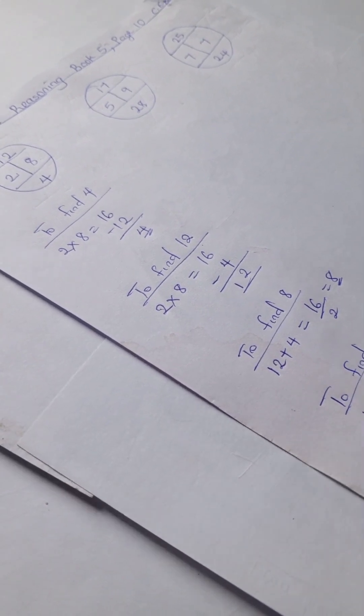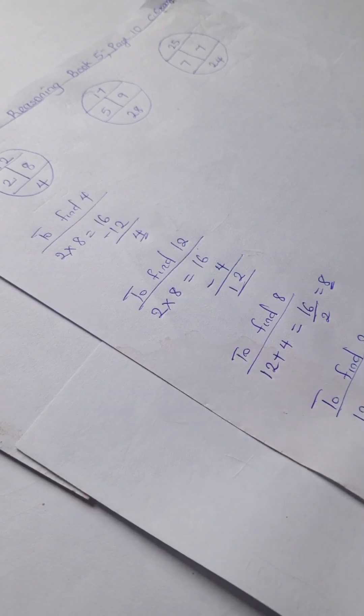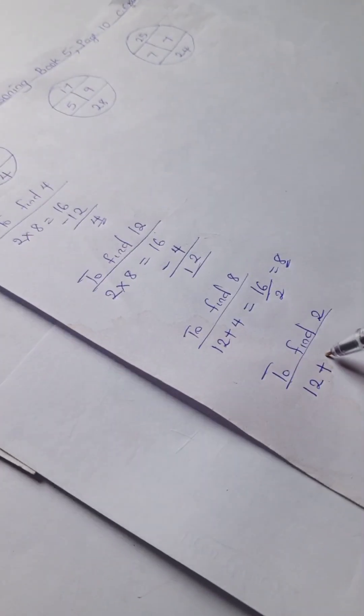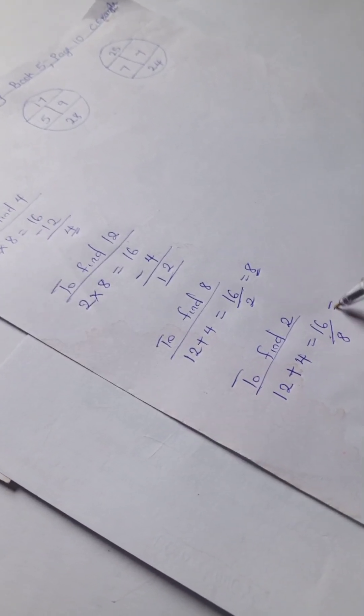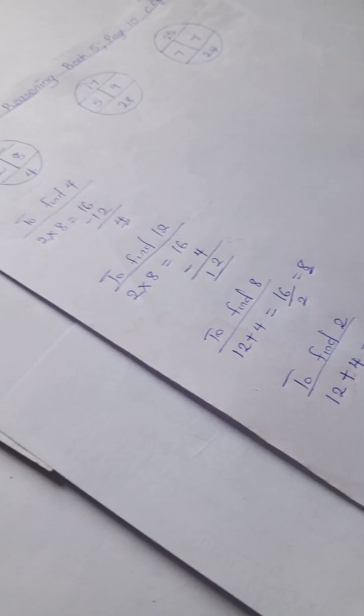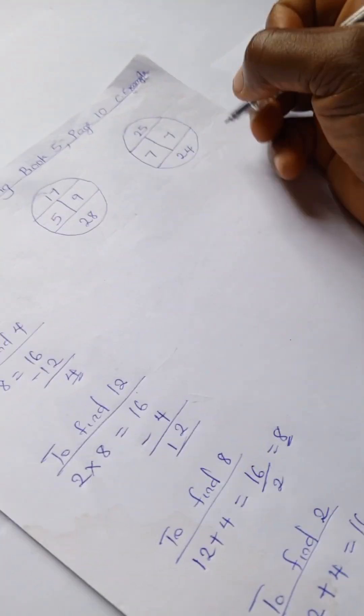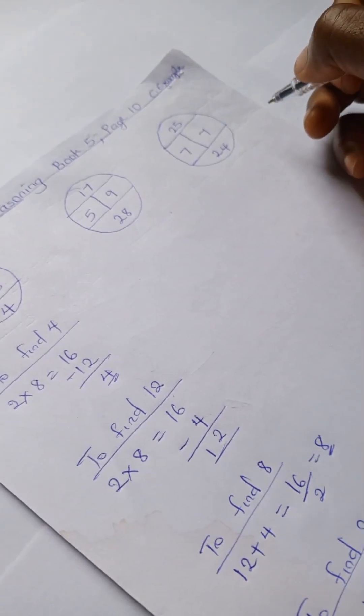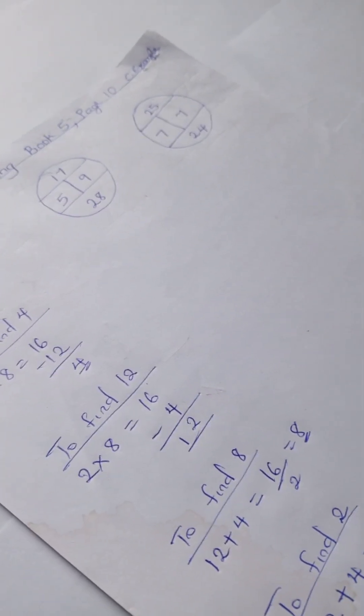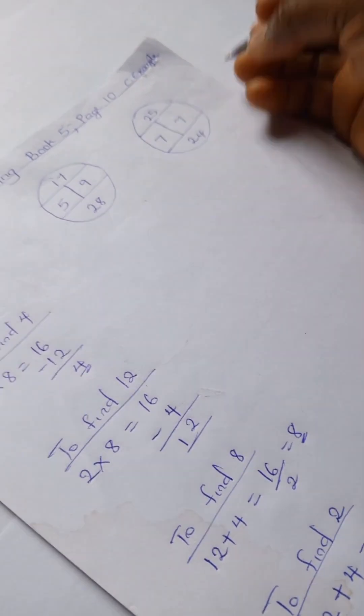To find 2, 12 plus 4 equals 16, and 16 divided by 8 equals 2. Okay, so let's do the same for this and see if we're going to get similar answer. Don't forget to subscribe to this channel for more quantitative reasoning solutions.